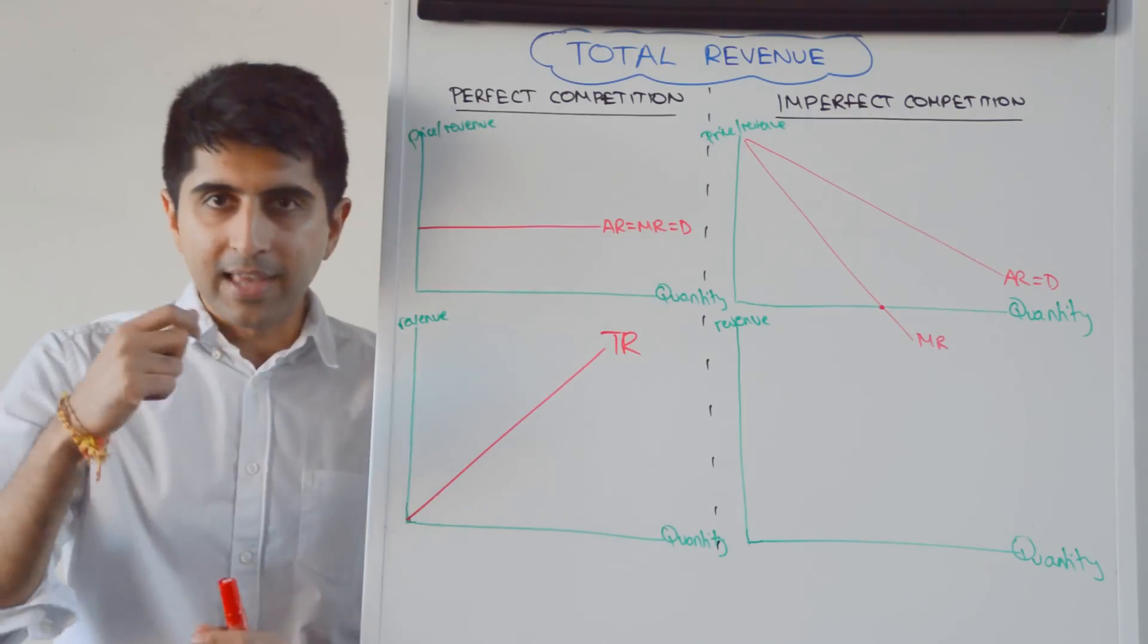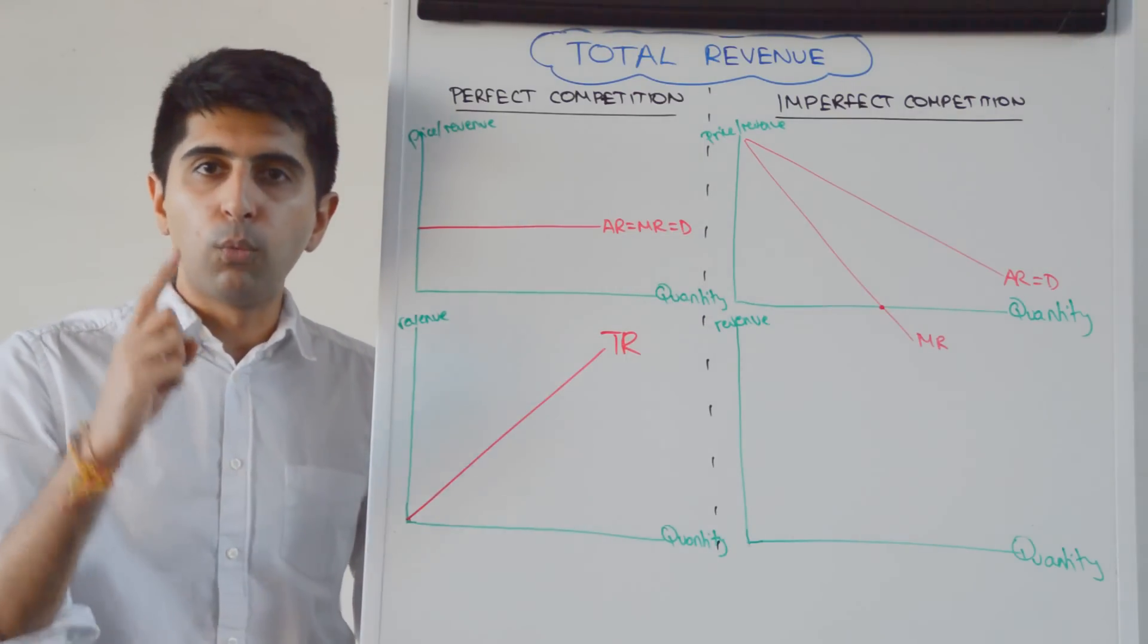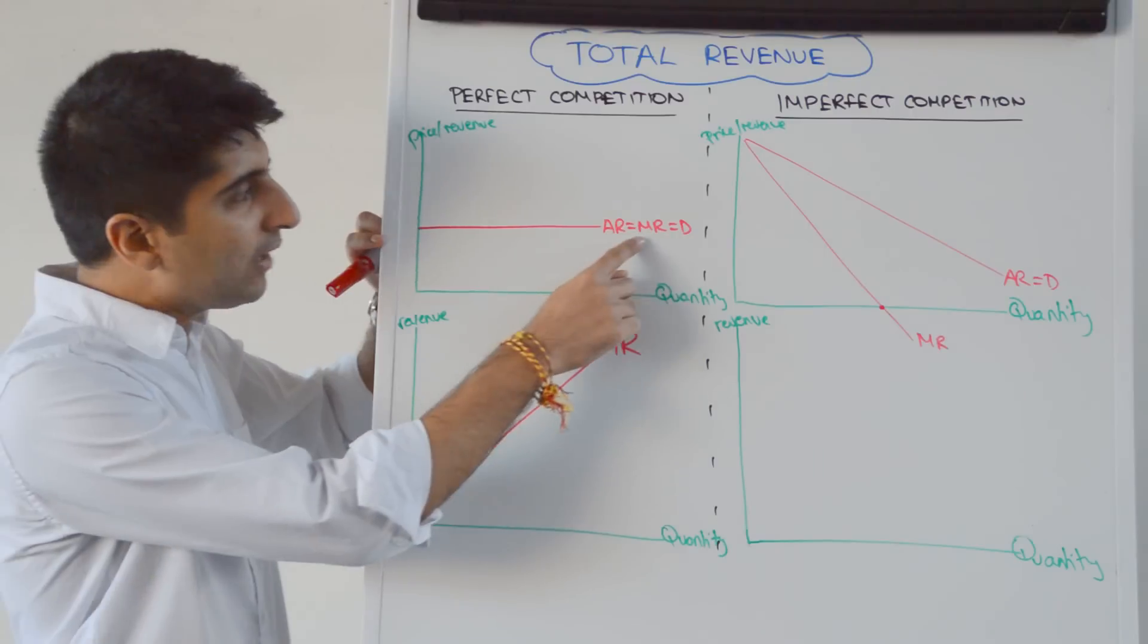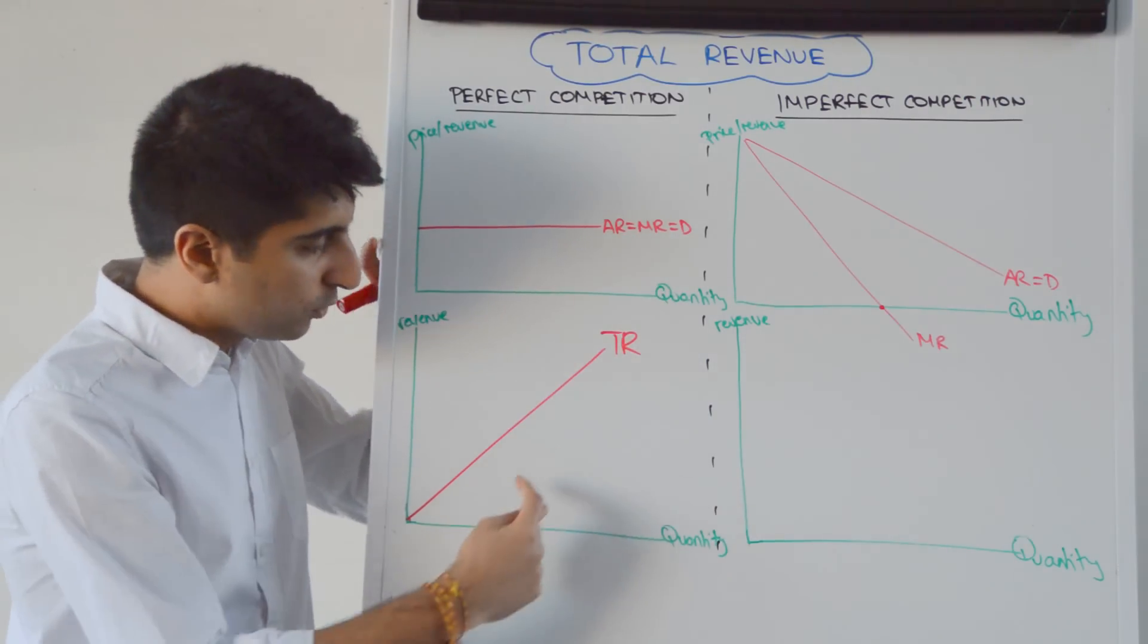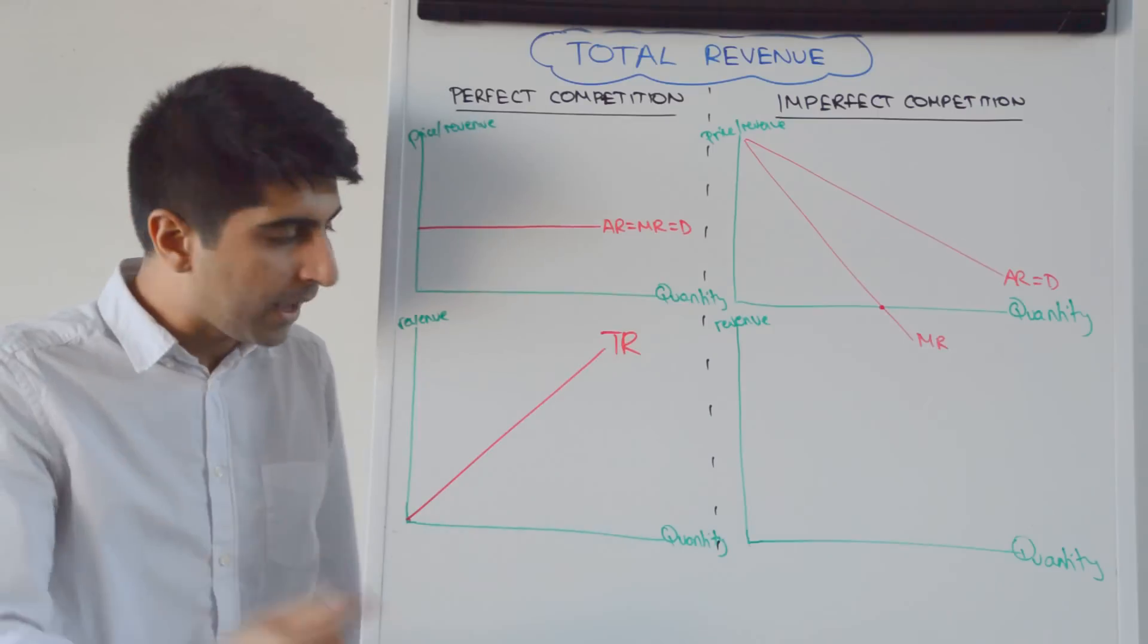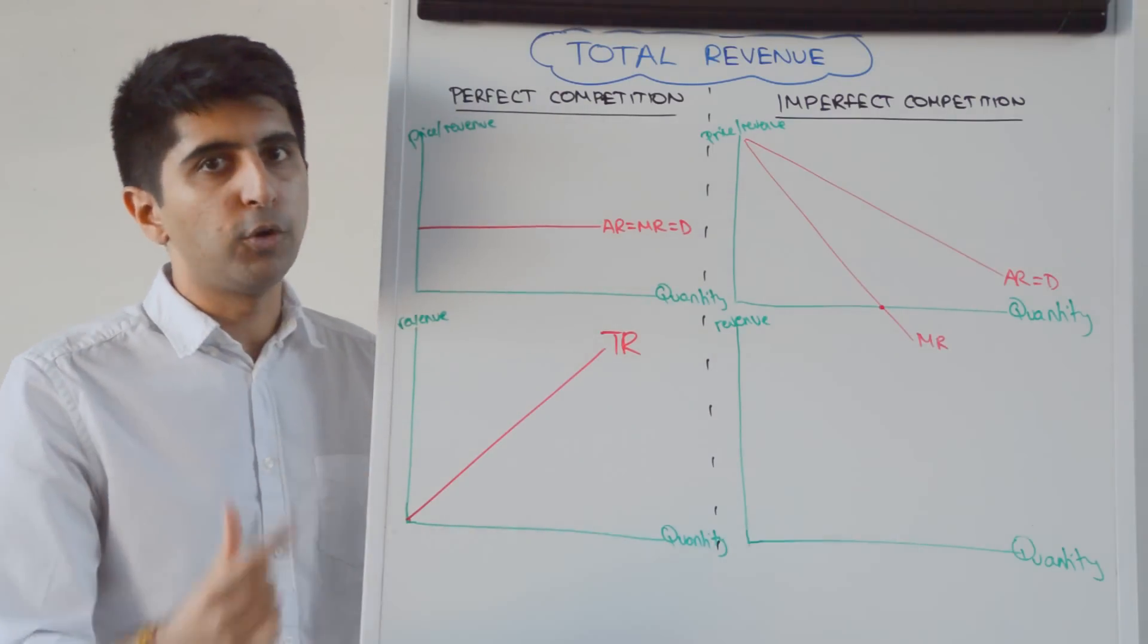Remember, marginal revenue is the extra revenue generated when one more unit is sold. If the extra revenue generated is the same every single time, then total revenue is going to be increasing at the same pace every single time one more unit is being sold.